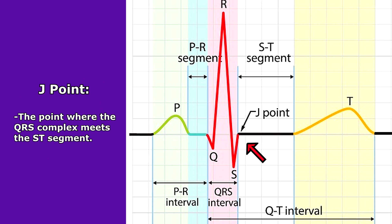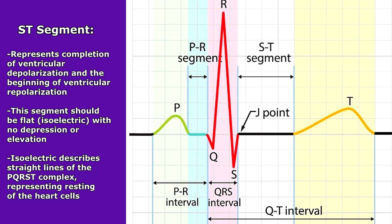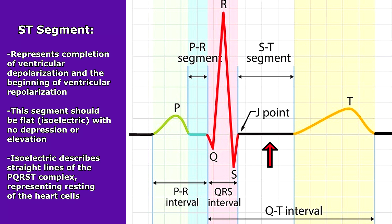Then we have the J point, which is the point where the QRS complex meets the ST segment. The ST segment represents the completion of ventricular depolarization and the beginning of ventricular repolarization. This segment should be flat — isoelectric — meaning there should be no depression or elevation. Isoelectric describes straight across lines of the PQRST complex, representing that the heart cells are resting and not creating electrical activity.